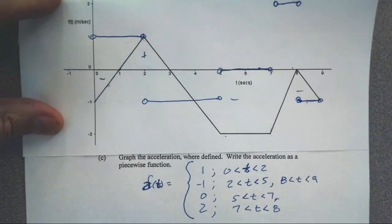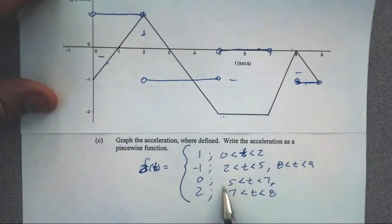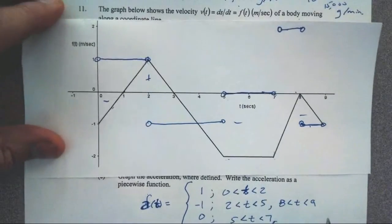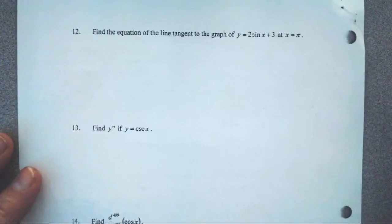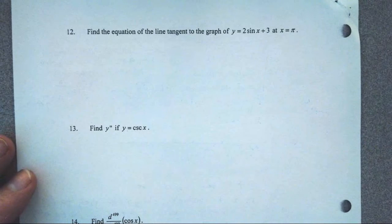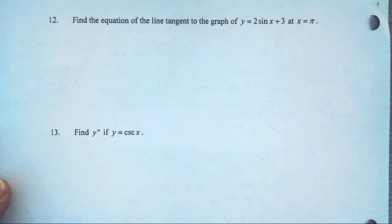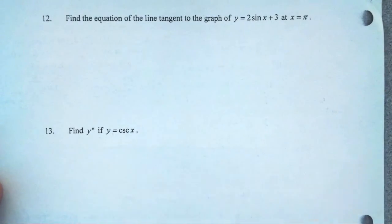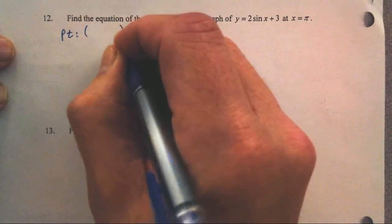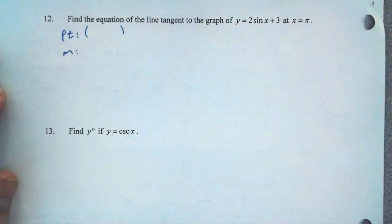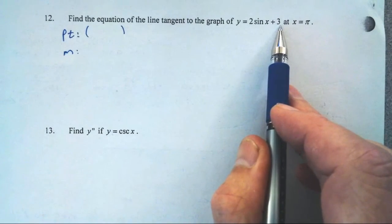If we miss the piecewise part on the test, I will grade that part based on your graph. Without having looked at trigonometry, we've got some trig here to talk about. We didn't go through section 3-5, but we have a sheet with our derivative rules. Find the tangent line. For the tangent line, I need a point and a slope. Here's my equation: y equals two sine of x plus three.